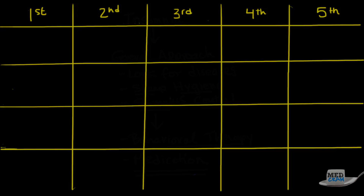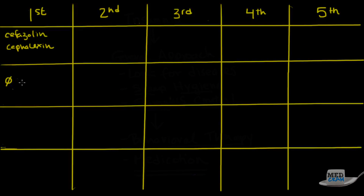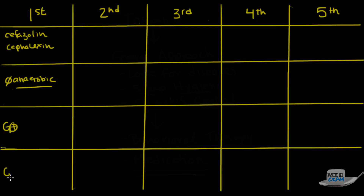As we go from first to second to third to fourth generation, you'll see there is better and better gram-negative coverage. With the first generation cephalosporins, we have medications like cefazolin and cefalexin. These antibiotics really have no anaerobic coverage, but they have a lot of gram-positive coverage — really good staph and pretty good strep coverage.